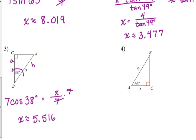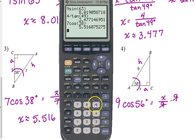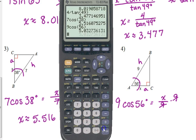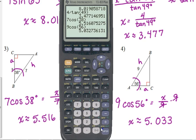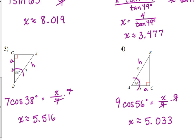Last example here. 9 is the hypotenuse. 56 is touching the side x. So we have another cosine. Cosine of 56 degrees is equal to the adjacent x over the hypotenuse 9. Multiply both sides by 9. 9 cosine of 56 is going to give us our missing side at approximately 5.033. That's all there is to this part of it.